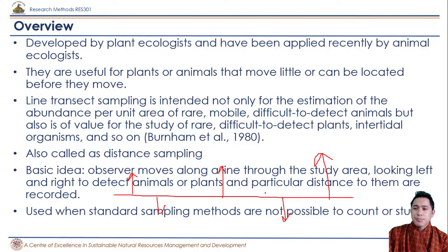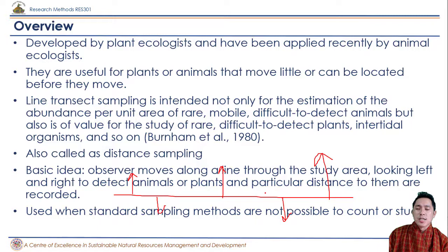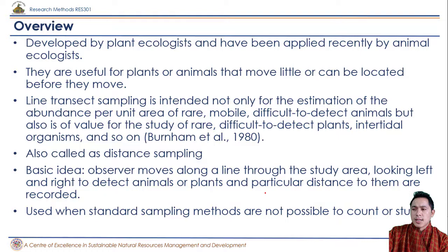We can traverse the transect line on foot, by vehicle, on horseback, or even on airplanes. Even by boat, if we want to observe left and right vegetation or faunal diversity on the water. That covers the overview of transects — it is not only useful for rare plants but also for detecting rare animals.